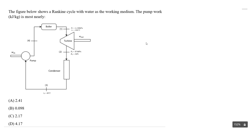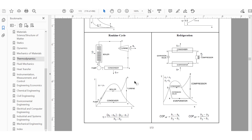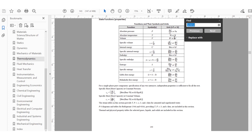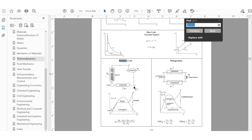Let's do an example where we're looking at a Rankine cycle and we want to determine the pump work in kilojoules per kilogram. This is also provided in the FE handbook as a figure — let's go to that page. It's going to be on page 172 in the thermodynamics section.